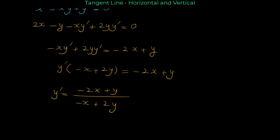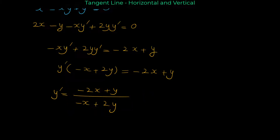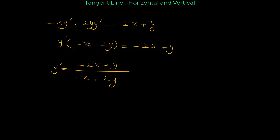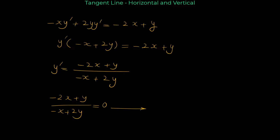Because we want to find the points where the tangent line is horizontal, y' at those points equals 0. So we set (-2x + y) / (-x + 2y) = 0. When a fraction equals 0, we conclude that the numerator equals 0. So from this equation, -2x + y = 0, which means y = 2x.